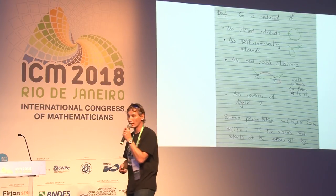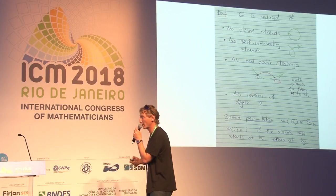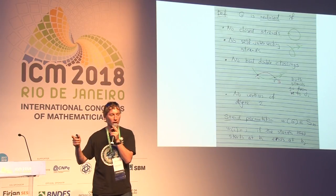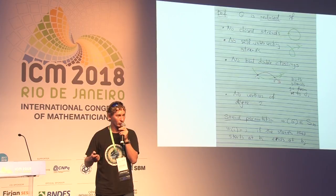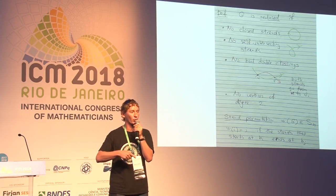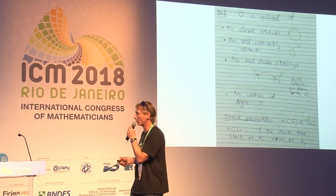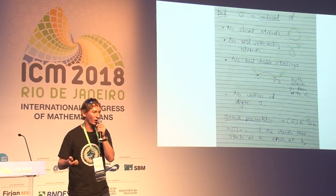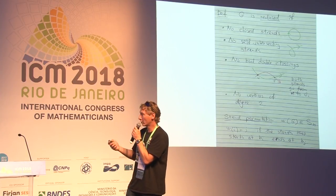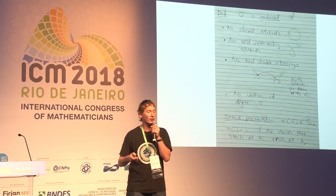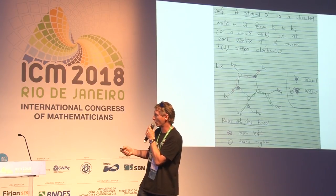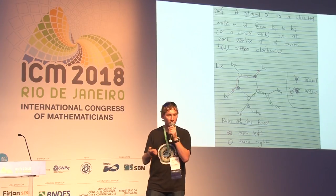A graph is reduced if it has no closed strands, strands cannot self-intersect, and there are no 'bad double crossings' — two different strands cannot have two common points such that both go from the first point to the second. A 'good double crossing' where one strand goes from u to v and the other from v to u is allowed. This notion is similar to reduced decompositions in Weyl groups. The strand permutation is the permutation of size n sending i to j if the strand starting at boundary vertex i ends at boundary vertex j.